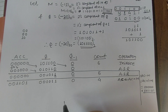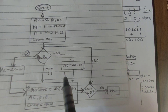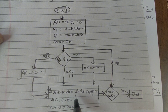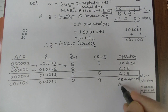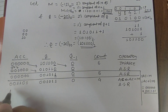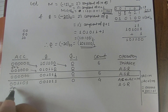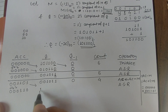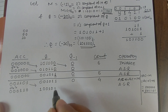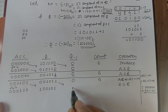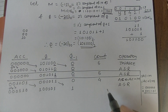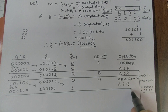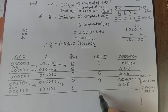After this subtraction operation, Booth's algorithm requires us to perform ASR. The sign bit is preserved and all bits shift right. After shifting — AC becomes 000110, Q shifts accordingly — this step is complete and count is decremented to 3.